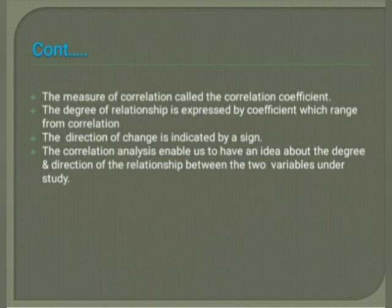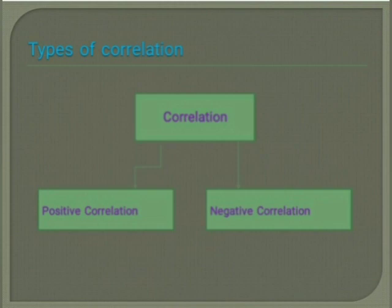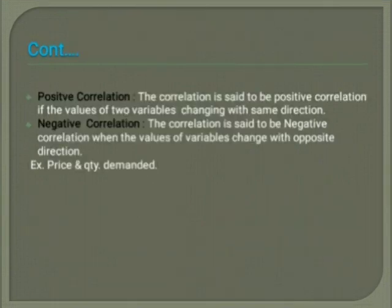In a bivariate distribution, if two variables are present, the correlation is classified into two types. One is positive correlation and another one is negative correlation. In positive correlation, if the variables increase or decrease in the same direction, it is said to be positive correlation — the two variables changing in the same direction.